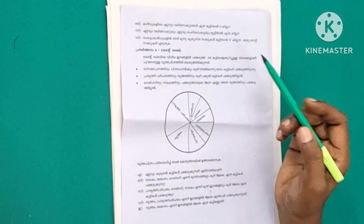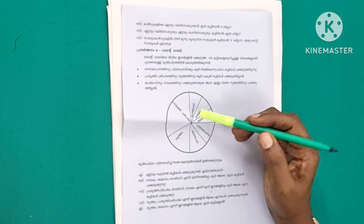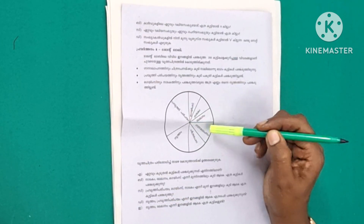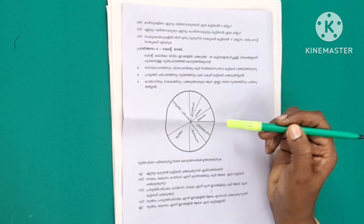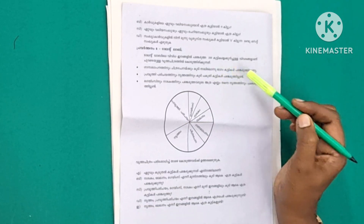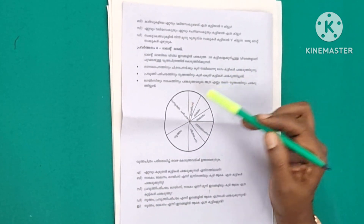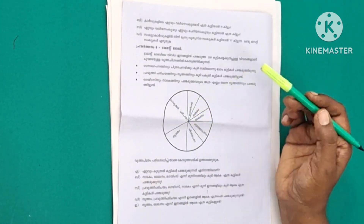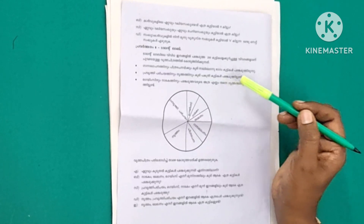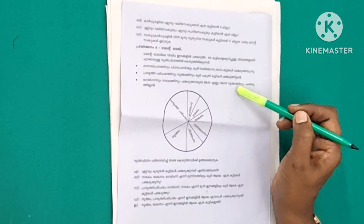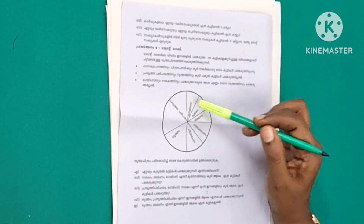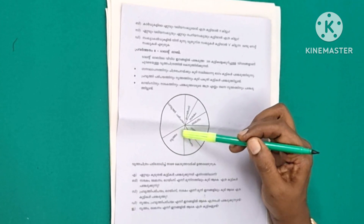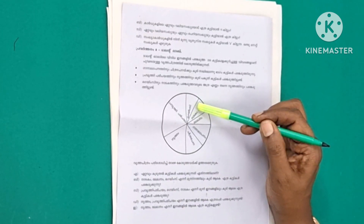The Talent Lab has 4 items. One fourth of the students participated in music and drawing. Half of the students participated in work experience and dance. The number of students participated in the Talent Lab is shown in the chart.